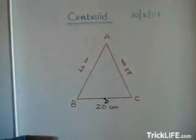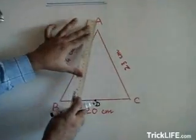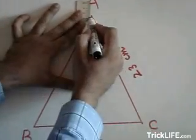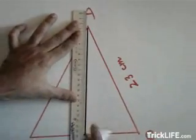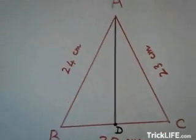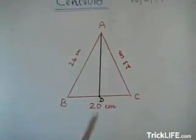This is the midpoint of BC. Now the vertex A and the midpoint of BC are joined with the help of ruler. So this is one of the medians of triangle ABC drawn from vertex A.